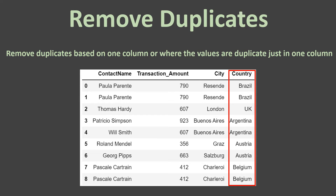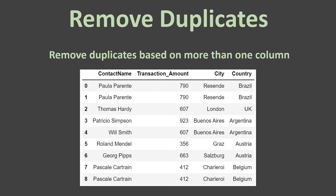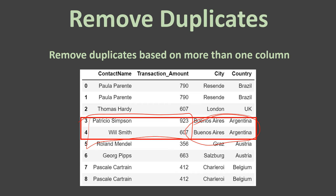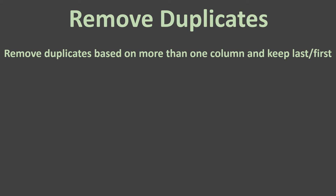Next comes removing duplicates based on more than one column. In the previous example we found duplicates in the country column, but here values are only duplicate in these two columns — country and city — while the rest of the values are unique. So if you want to specify that where both country and city are duplicate, just remove that one — you can do that as well in a pandas DataFrame.